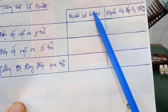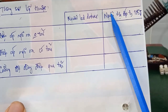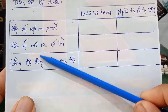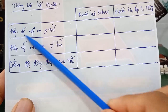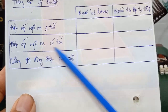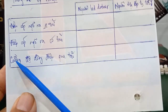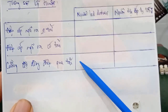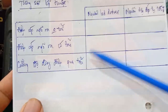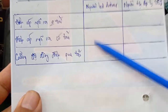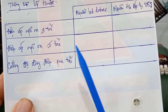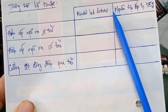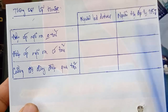Tiếp theo mình sẽ lập một bảng so sánh thông số kỹ thuật giữa nguồn LED driver và nguồn hạ áp dùng tụ 105G. Mình sẽ đo các giá trị như điện áp ngõ ra không tải, điện áp ngõ ra có tải và cường độ dòng điện qua tải, từ đó so sánh và đưa ra nhận xét.